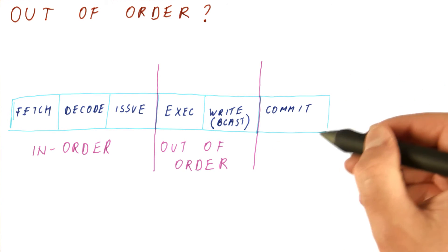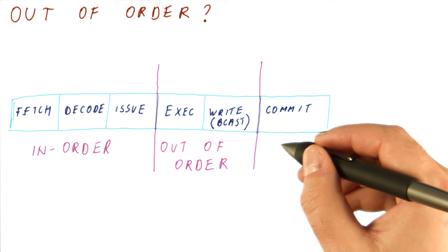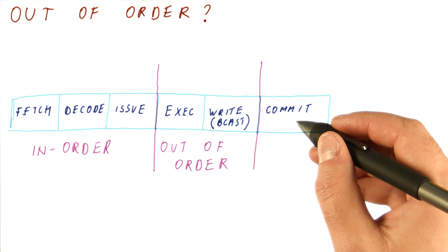And then, again, commit needs to do instructions in the proper program order, because if you remember, the order of committing is really the order in which we tell the outside world that we are finishing instructions. So this has to happen in order to give the appearance that we are executing instructions in program order.